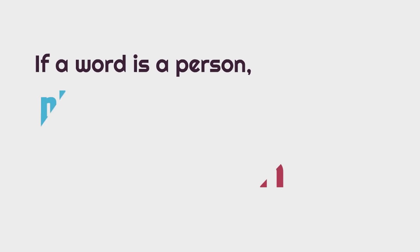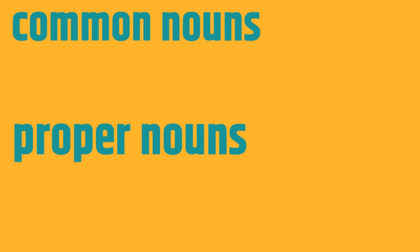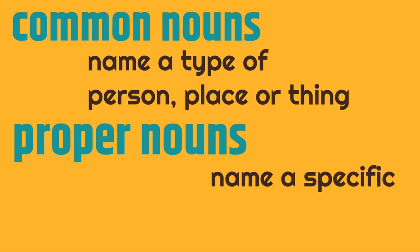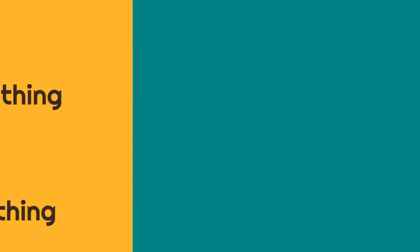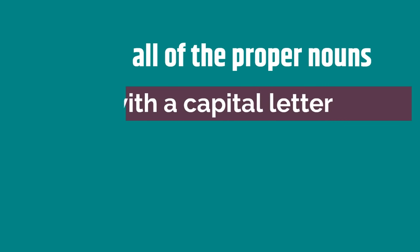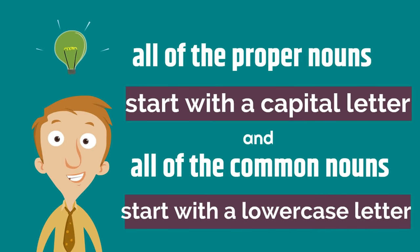To review: if a word is a person, place, or thing, it is a noun. And there are two types of nouns. Common nouns, which name a type of person, place, or thing. And proper nouns, which name a specific person, place, or thing. And all of the proper nouns start with a capital letter, and all of the common nouns start with a lowercase letter.